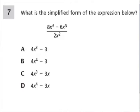Looking at dividing polynomials and monomials. So here we have a polynomial over a monomial. What's the simplified form? So how do we handle this?